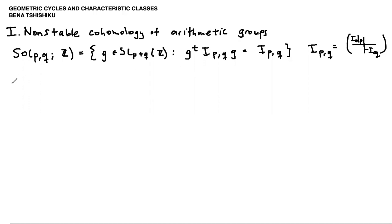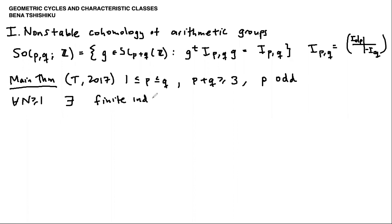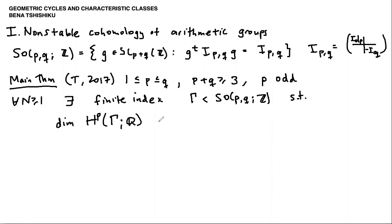Let me go ahead and state the main theorem. I proved this in 2017. Take p less than or equal to q, assume p plus q is at least three to avoid trivial cases, and let's say p is odd — this will be an important assumption. Then for every N at least one, there exists a finite index subgroup so that it has a lot of cohomology in degree p. The p-th cohomology of gamma rationally has dimension at least N.